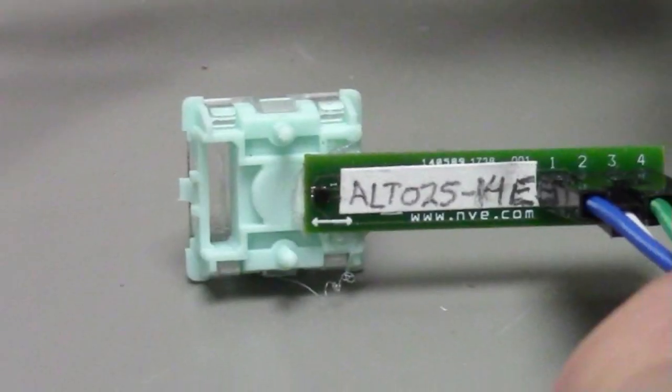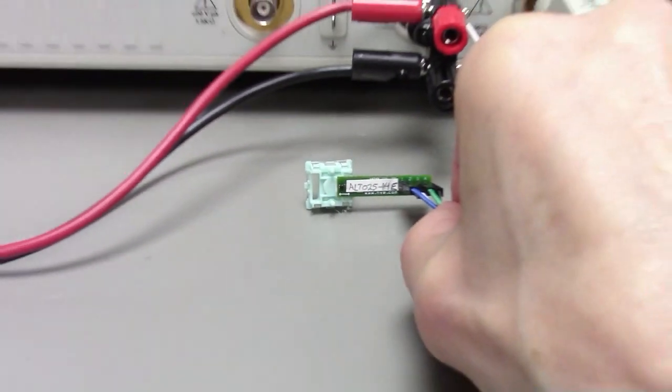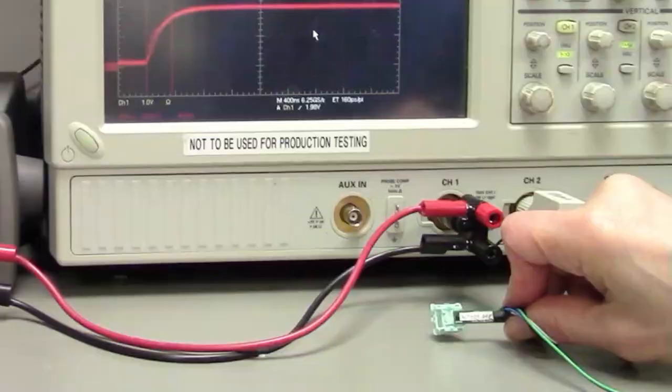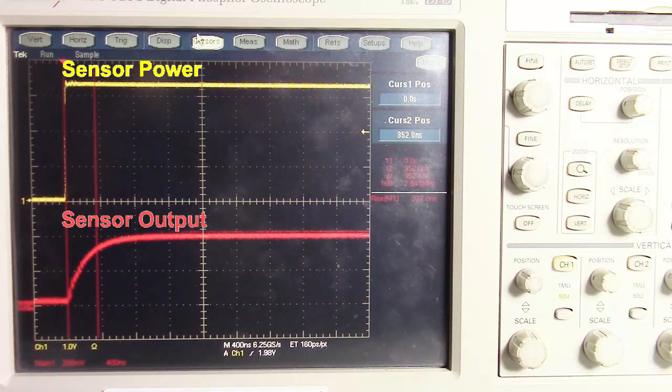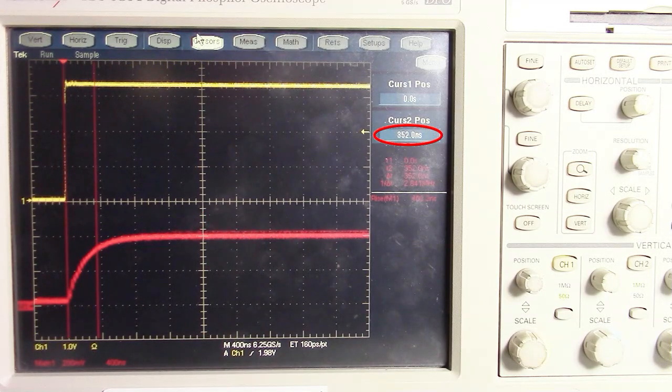Today we're back in the lab to look at speed. A signal generator provides a duty-cycled 3.3-volt sensor supply. The rise time is just 352 nanoseconds. The scope probe capacitance is 8 picofarads, and that causes most of the delay.